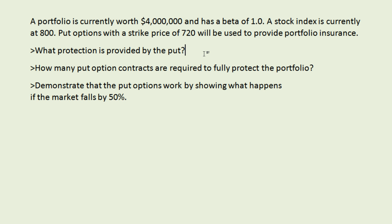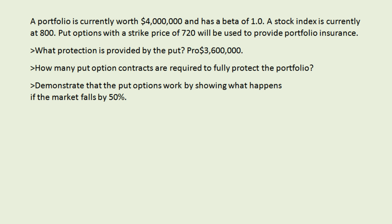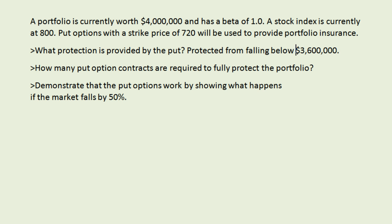That means we have portfolio protection exactly in the case when the market falls by 10% or more. If the market falls by 10% or more and our portfolio has a beta of one, we would expect our portfolio to also fall by 10% off of 4 million — taking 400,000 off gives us 3.6 million. So our portfolio is protected from falling below 3.6 million.